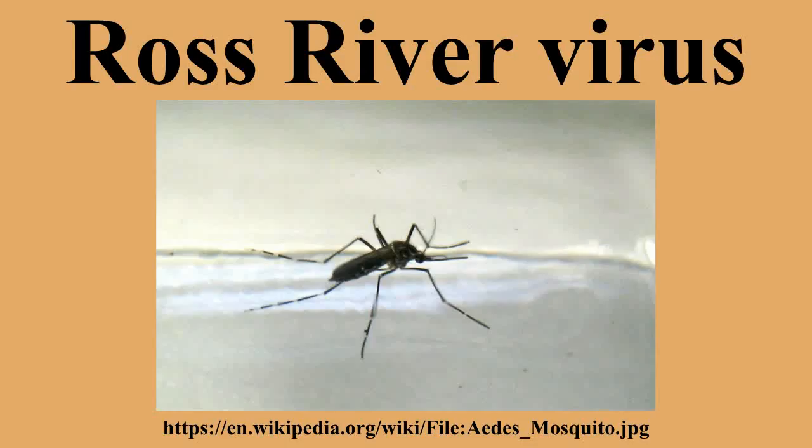The virus itself was first isolated in 1972 using suckling mice. It was found that RRV isolated from human serum could kill mice. However, the serum containing the virus had come from an Aboriginal boy from Edward River, North Queensland. The child had a fever and a rash but no arthritis, making the link between RRV and Ross River fever less than concrete.